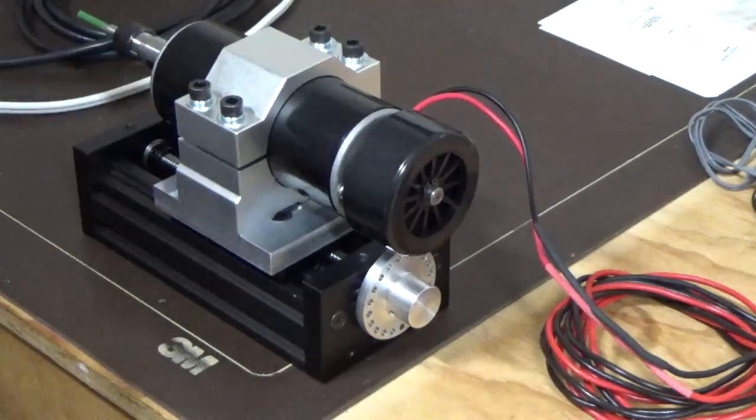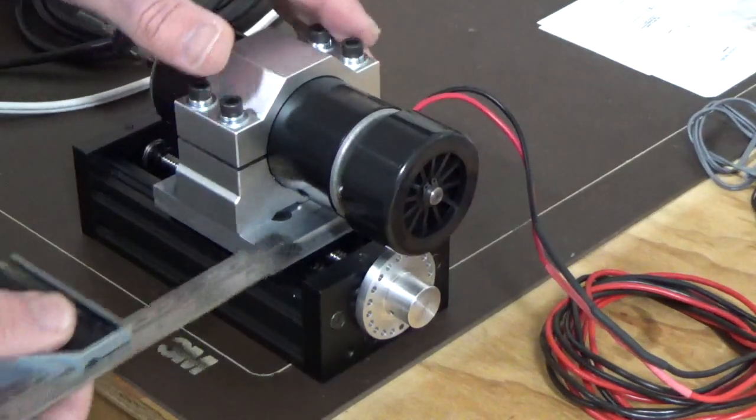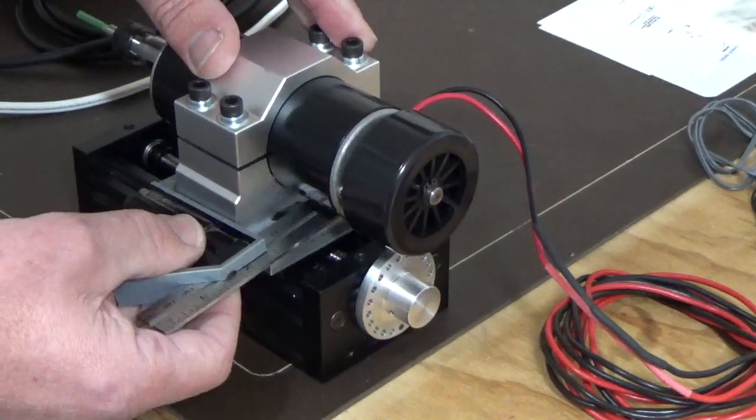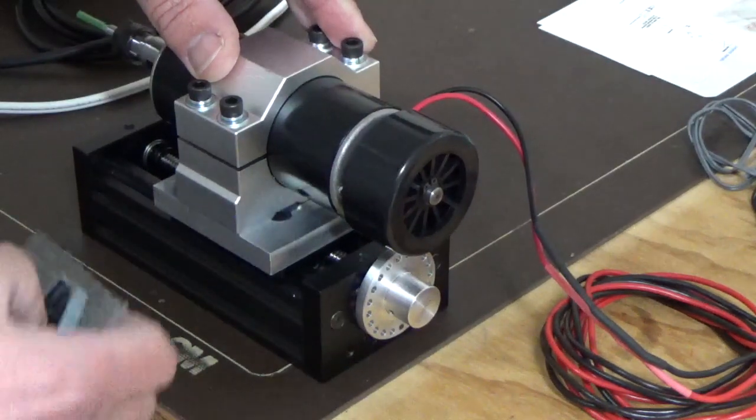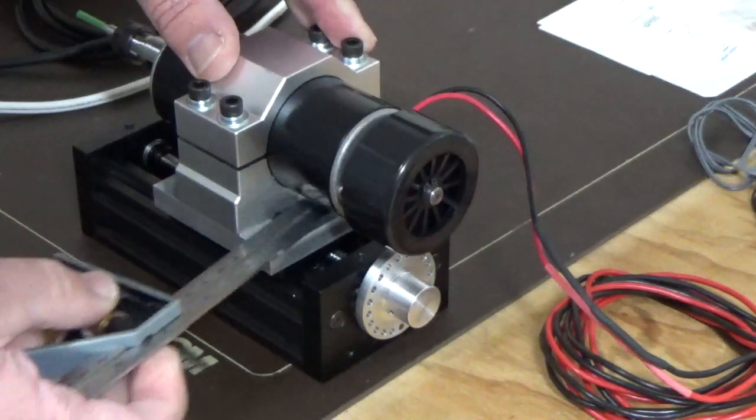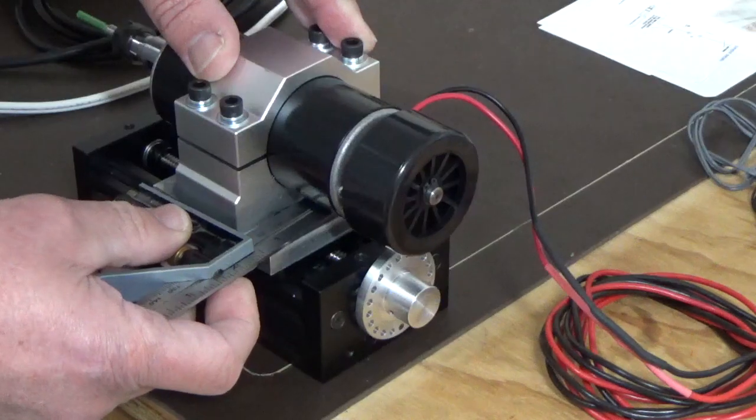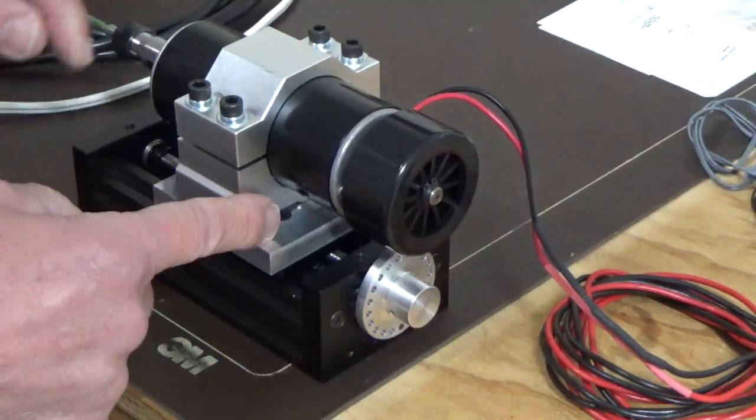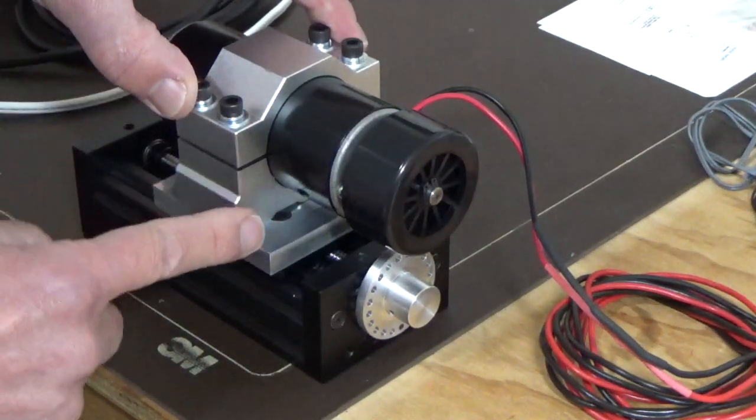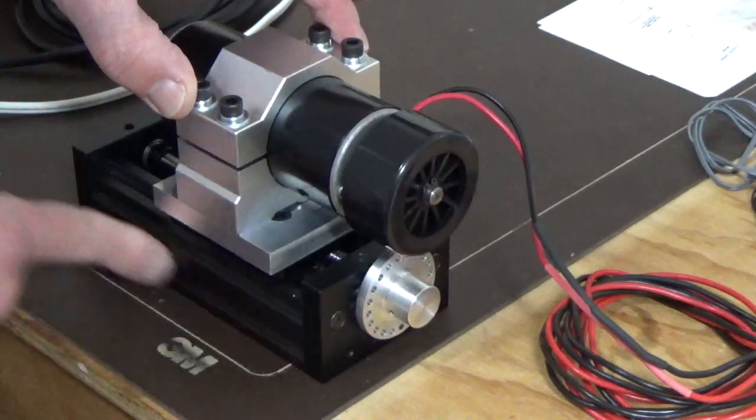The first thing we've got to do is make sure that the motor is square to the block, and we've already gone through and done that. So this is square to that, and that is square to here.